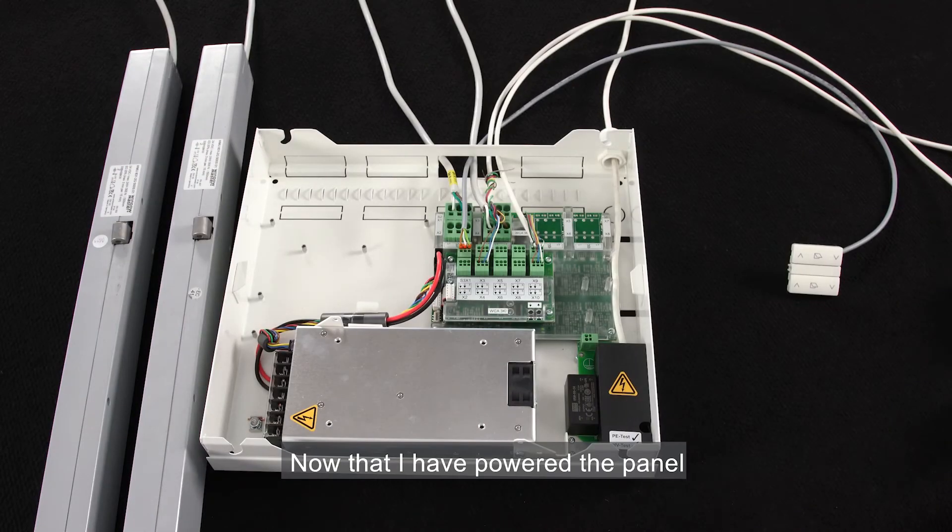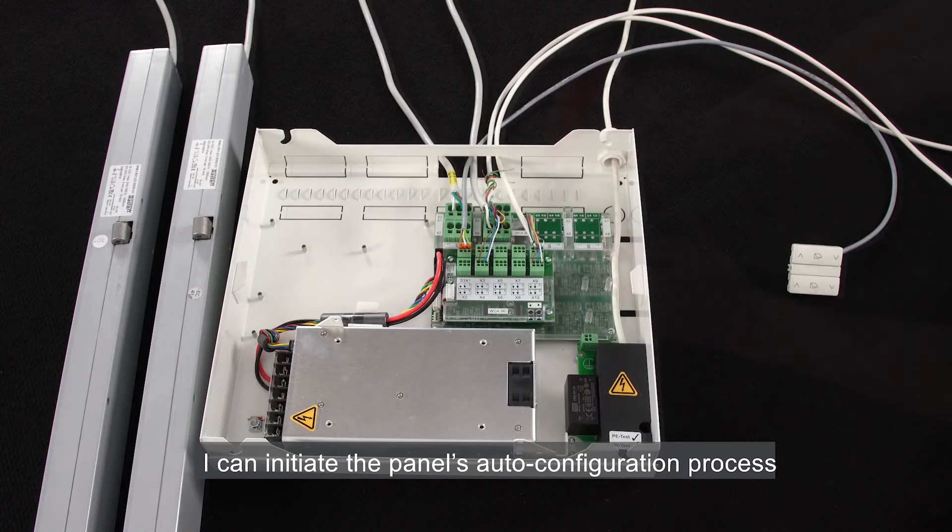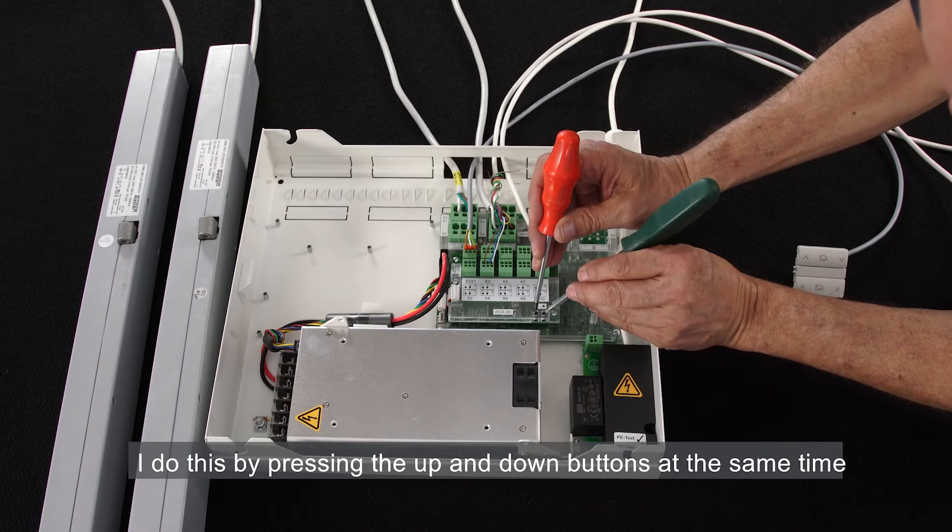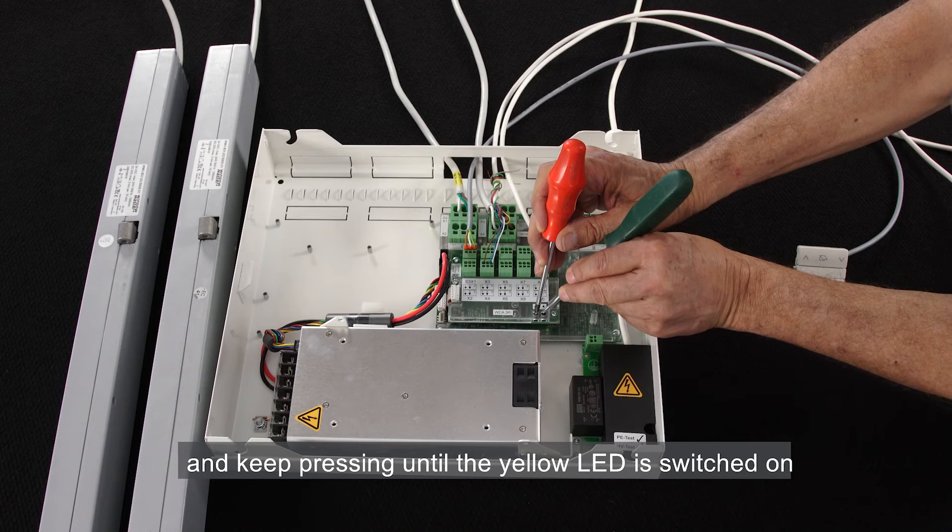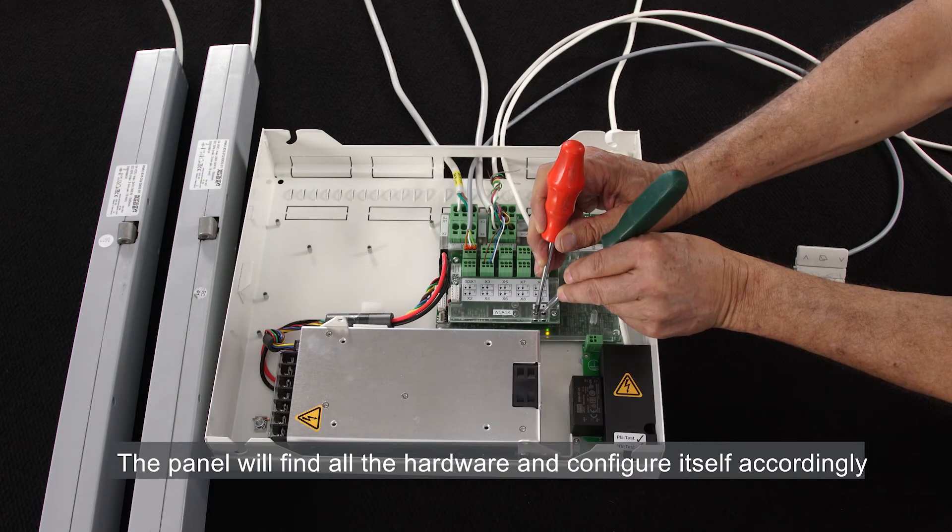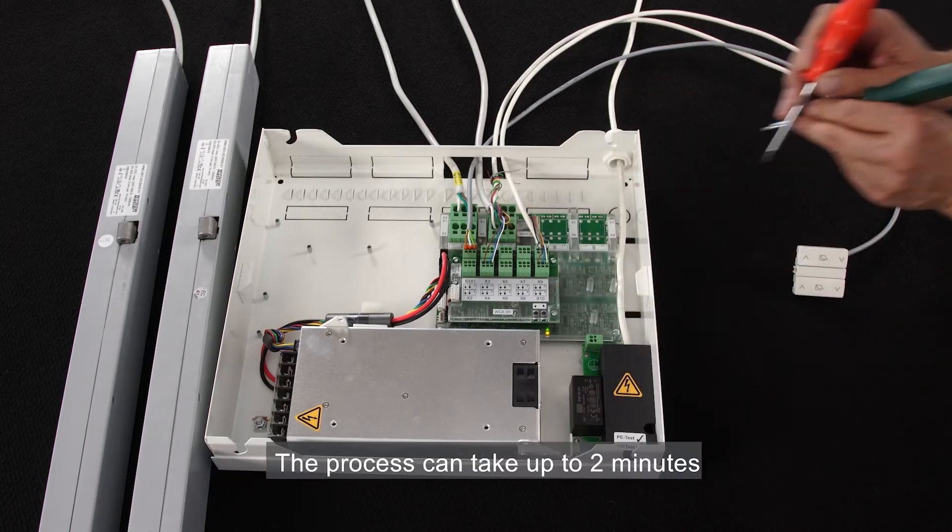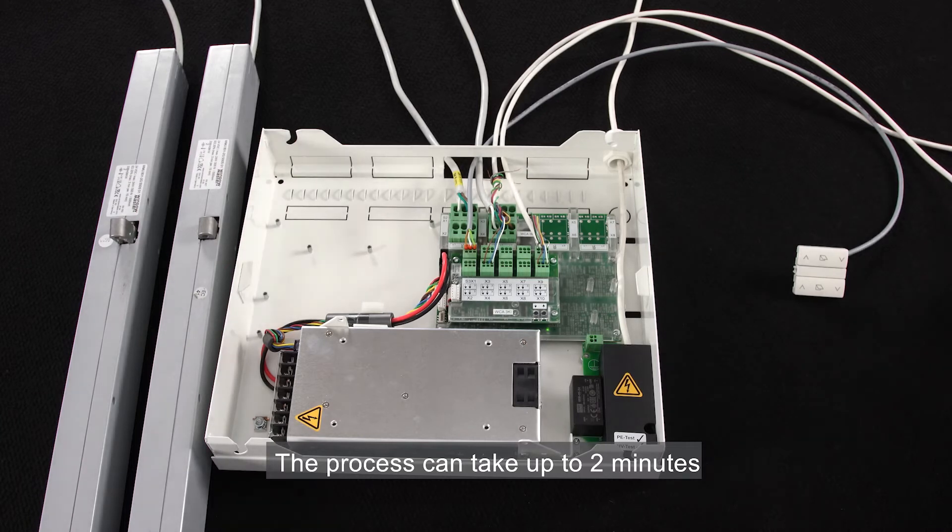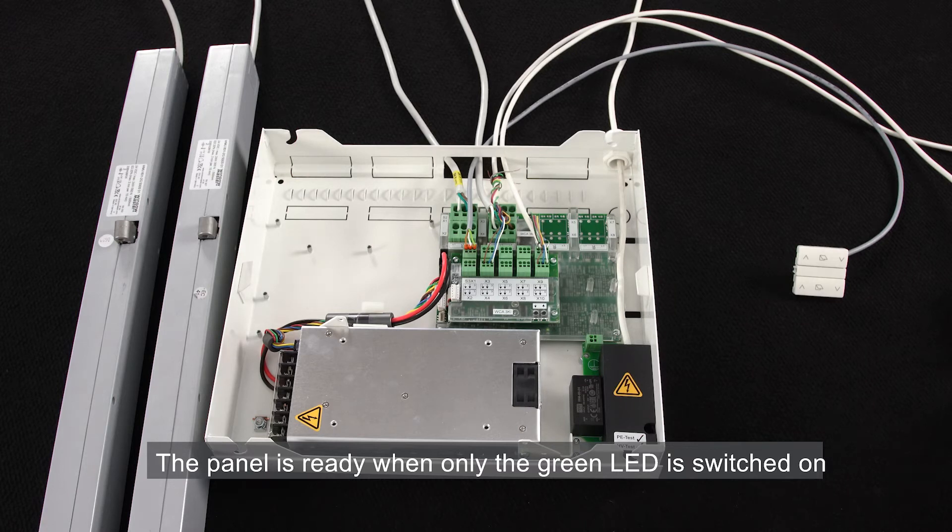Now that I've powered the panel, I can initiate the panel's auto configuration process. I do this by pressing the up and down buttons at the same time and keep pressing until the yellow LED is switched on. The panel will find all the hardware and configure itself accordingly. The process can take up to two minutes. The panel is ready when only the green LED is switched on. The panel is now ready.